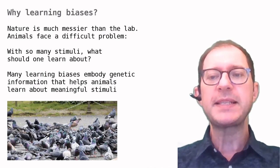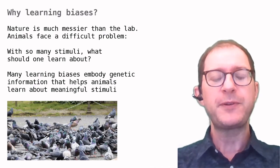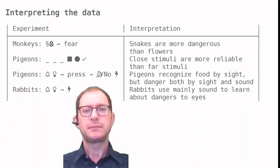Let's see if this makes sense by going over the examples of overshadowing that we have seen. The monkey experiment is clearest in this sense. It is easy to see that snakes are more dangerous than flowers. If monkeys had no genetic information on how to learn about danger, the sight of a scared monkey would result in fearing the flowers as much as the snake, which would make little sense.